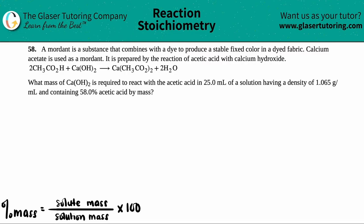Number 58: a mordant is a substance that combines with a dye to produce a stable fixed color in a dyed fabric. Calcium acetate is used as a mordant. It is prepared by the reaction of acetic acid with calcium hydroxide, and this is the equation for that reaction.